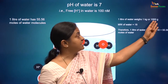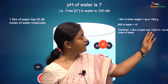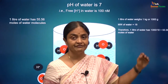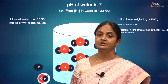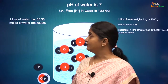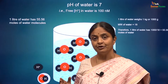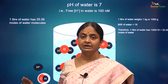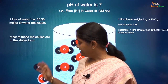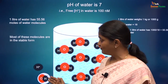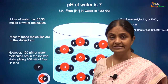A liter of water weighs 1000 grams and the molecular weight of water is 18. Therefore, 1 liter of water will have 1000 divided by 18, which is 55.56 moles of water, and each mole will have Avogadro's number of molecules in it. These many moles will have 55.56 times Avogadro's number of water molecules. Of that, only 100 nanomoles of water molecules are ionized, whereas most remain in the stable state.